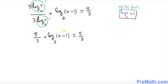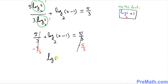Now we want to isolate the log, so I subtract 5 over 3 from both sides. The 5/3 terms cancel, leaving log of (x minus 1) with base 2 equal to 0.